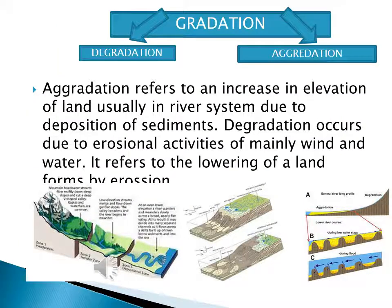In this chapter we have to take the idea first about gradation. Gradation may be defined as the process which attempts to remove all unevenness on the surface of the land and reduce them almost to sea level. The processes of gradation try to bring the surface of land to a common level. This function is done by the agents of aggradation and degradation.